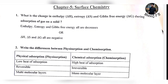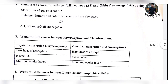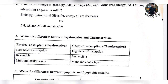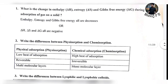Delta G stands for Gibbs free energy. Enthalpy is delta H, entropy is delta S. During adsorption, all three — enthalpy, entropy, and Gibbs free energy — decrease. All are negative.